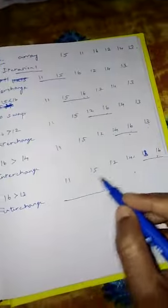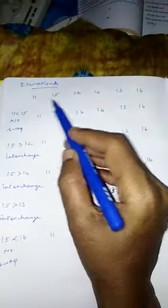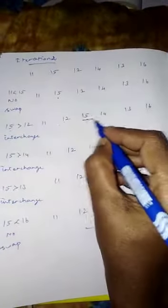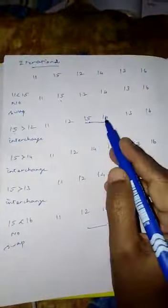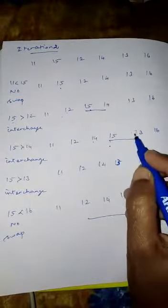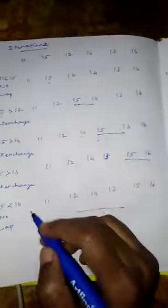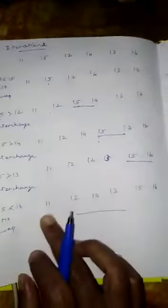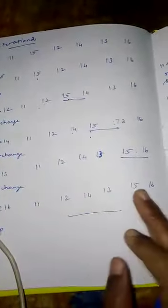After the first iteration the array is: 11, 15, 12, 14, 13, 16. Now start the second iteration. Take 11 and 15 — 11 is less than 15, write as such. Take 15 and 12 — 15 is greater than 12, exchange: 12 here, 15 here. Take 15 and 14 — 15 is greater, exchange: 14 here, 15 here. Take 15 and 13 — 15 is greater, exchange: 13 here, 15 here. Take 15 and 16 — 15 is less than 16, write as such. After second iteration: 11, 12, 14, 13, 15, 16.